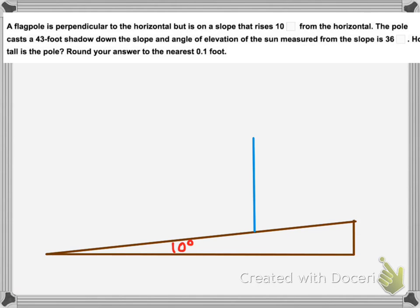They throw this word in here from the slope is 36 degrees. Remember how shadows are made - the Sun is going to come across the pole, the pole is going to block it, so that angle from the slope up to the Sun is 36 degrees. So the actual angle of elevation of the Sun here is actually 46 degrees.